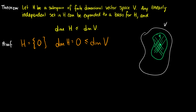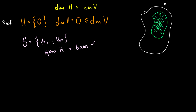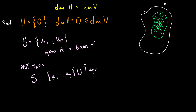Now let's consider that we have a set S of vectors u1 through up. If this spans all of H, then we have a basis. But if it doesn't span H — and remember this set is linearly independent — what we can do is take u1 through up and add another vector u(p+1) which is also linearly independent. So we can expand the set.